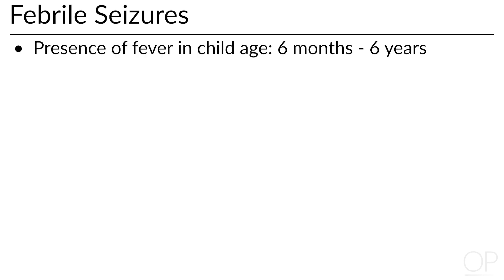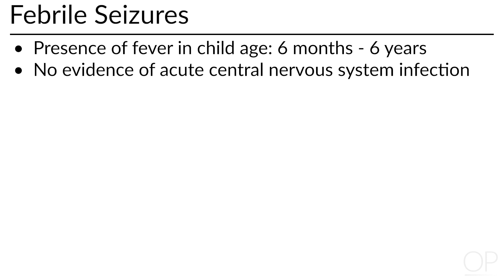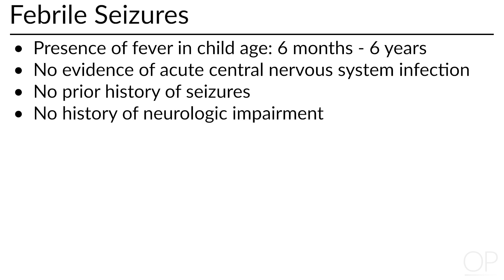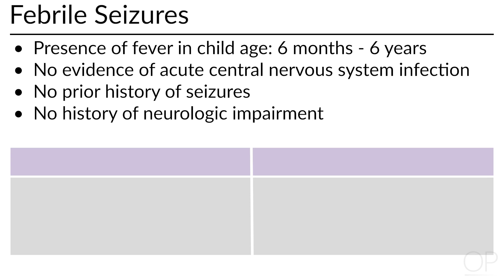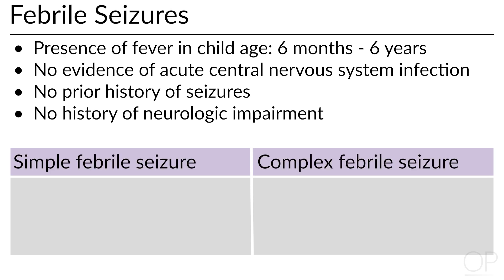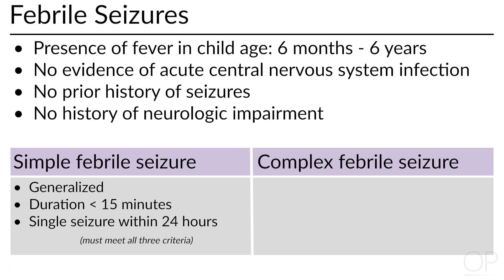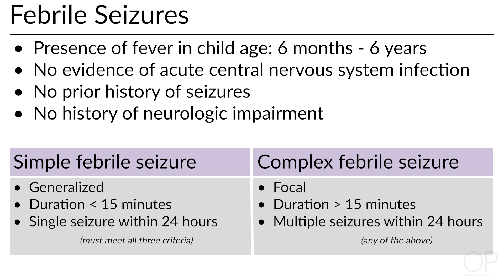Febrile seizures must meet the following criteria: presence of fever in a child between six months and six years, absence of a central nervous system infection, no prior history of neonatal or unprovoked seizures, no prior diagnosis of epilepsy, and no significant neurologic impairment. Febrile seizures can be further classified as simple or complex. Simple febrile seizures are generalized, last less than 15 minutes, and do not recur within 24 hours. Febrile seizures are classified as complex if the seizure is focal, lasts longer than 15 minutes, or recurs within 24 hours. Please note that while complex febrile seizures can be focal, you must always consider a brain lesion if the child has repeated focal febrile seizures affecting the same side of the body.